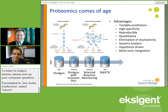This leads us into data-independent analysis, where the importance of not only spectral maps but also reproducibility in terms of sample preparation and sample analysis becomes quite important — and that's where reproducible chromatography really steps into play. It gives us the capability to fragment multiplexed versions of peptides, and we use our spectral maps to pull these things apart in a very quantitative manner. Our advantages include testable predictions, high specificity, high reproducible results, quantitative capability, and systems-type analysis with multiomic integrations.